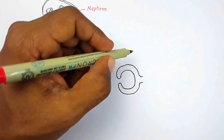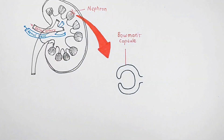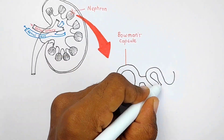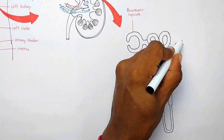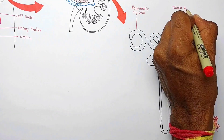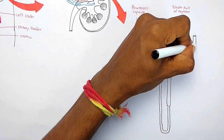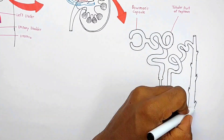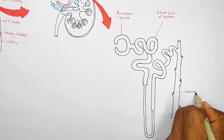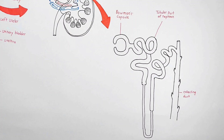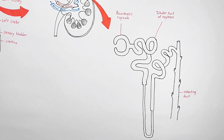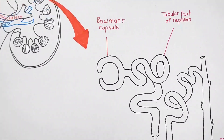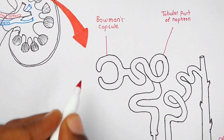This is the head of the nephron, called Bowman's capsule, and another part is called the tubular part of the nephron. After urine is formed in the tubular part of the nephron, it is collected into the collecting duct. There are three main steps of urine formation: filtration, reabsorption, and secretion.